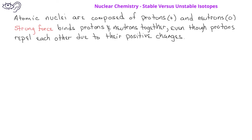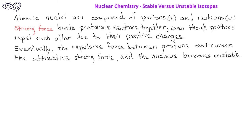However, at some point, the repulsive force from adding more protons to the nucleus overcomes the strong force and the nucleus becomes unstable. In fact, there are no stable nuclides with an atomic number greater than 83. This means that all elements after bismuth, which is atomic number 83, will be unstable and radioactive.